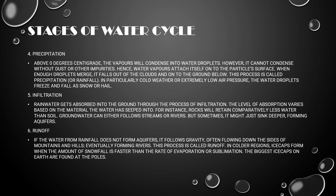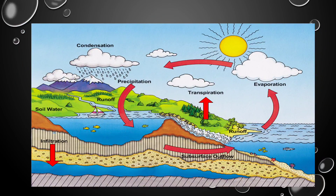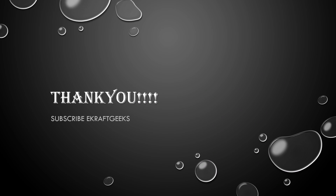The flowing water eventually forms rivers. This process is called runoff. In colder regions, ice caps form when the amount of snowfall is faster than the rate of evaporation or sublimation. The above figure shows the complete process of the water cycle.